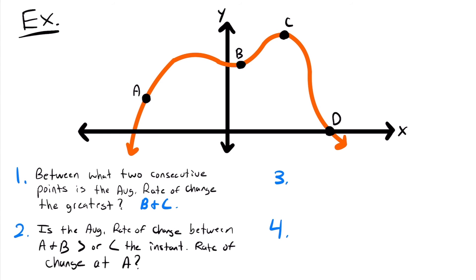Question two asks: is the average rate of change between A and B greater than or less than the instantaneous rate of change at point A? The average rate of change between A and B is the slope of the line connecting those two points, while the instantaneous rate of change at A is the slope of the tangent at that point. The tangent at A is steeper, so the average rate of change between A and B is less than the instantaneous rate of change at A.